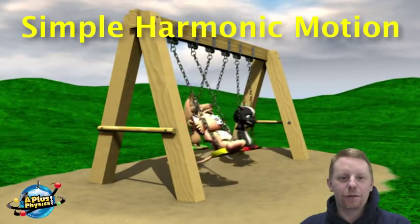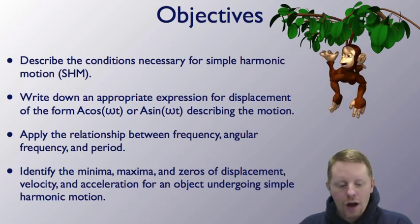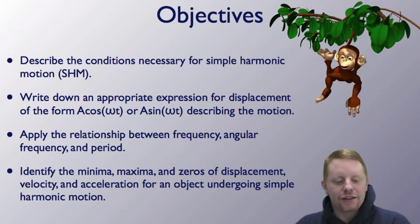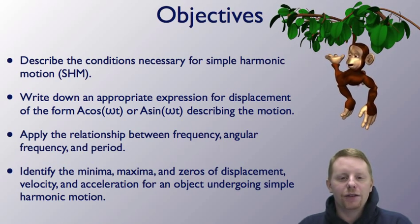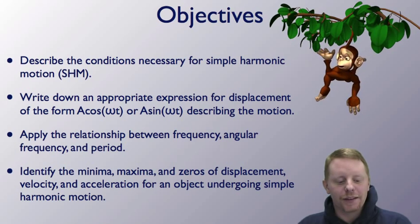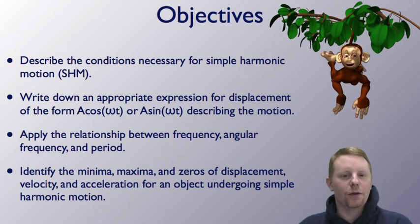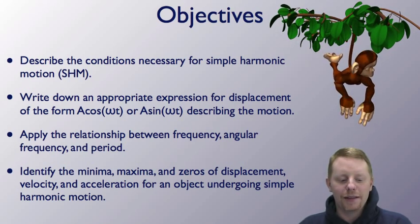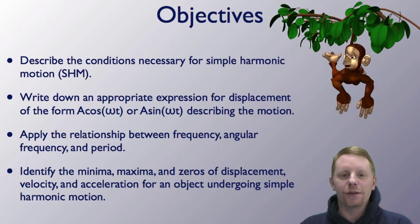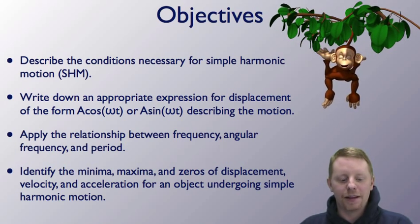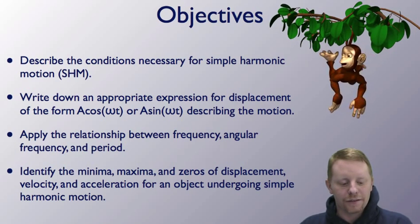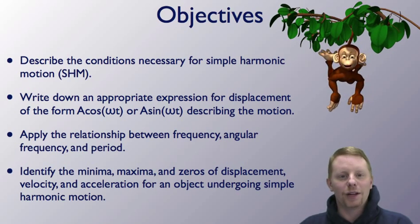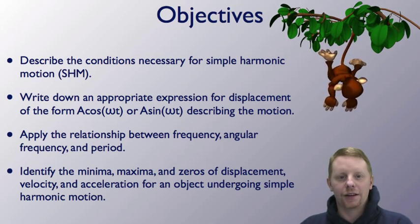Hello everybody, I'm Dan Fullerton, and in this lesson we're going to talk about simple harmonic motion. Our objectives include describing the conditions necessary for simple harmonic motion or SHM, writing down an appropriate expression for displacement of the form A cosine omega t or A sine omega t describing the motion, applying the relationship between frequency, angular frequency, and period, and finally identifying minima, maxima, and zeros of displacement, velocity, and acceleration for an object undergoing simple harmonic motion.